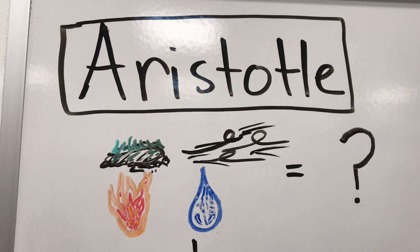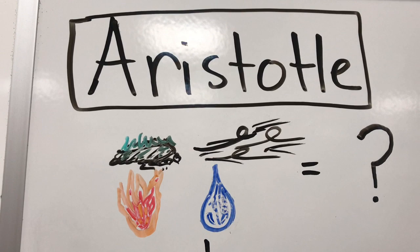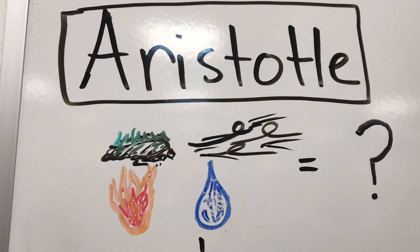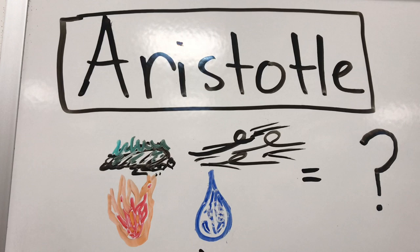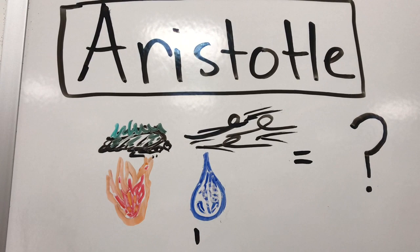The history of the periodic table starts with a man named Aristotle. Aristotle was a scientist-philosopher who lived many years ago. He believed that there were four main elements or groups — earth, wind, fire, and water — which when combined created all the things that we see in the world around us. This was based on his limited knowledge of science and his lack of understanding of atoms, elements, and smaller molecules than what the eye could see.